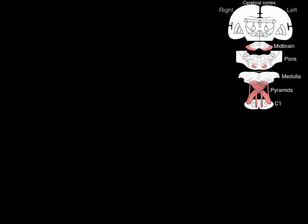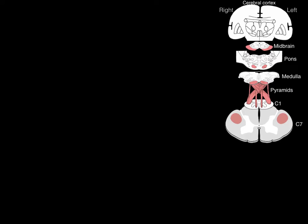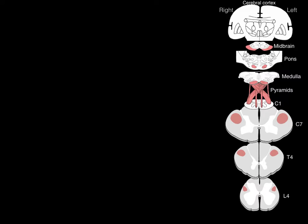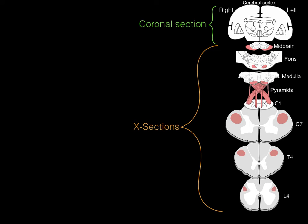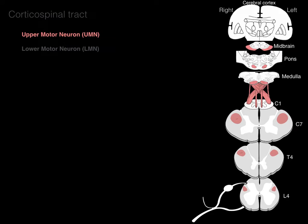With this picture showing a coronal section of the cerebral cortex and then cross sections of midbrain, pons, and medulla — which are brainstem — and then the decussation of the pyramids, and then spinal cord levels C1, C7, T4, and L4. The brainstem and spinal cord are going to be in cross sections and the cerebral cortex in a coronal section. Let's start with the upper motor neuron way up in the left portion of the cerebral cortex.